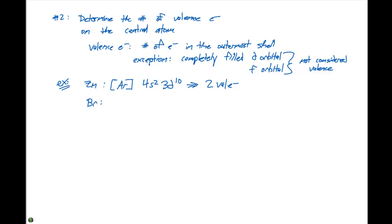Another example we can look at is bromine. It's also going to have the argon noble gas core and its electron configuration is 4s² 3d¹⁰ 4p⁵. And it has seven valence electrons.